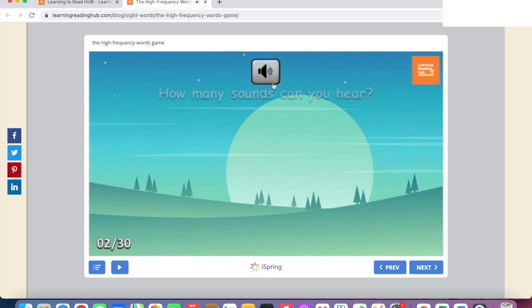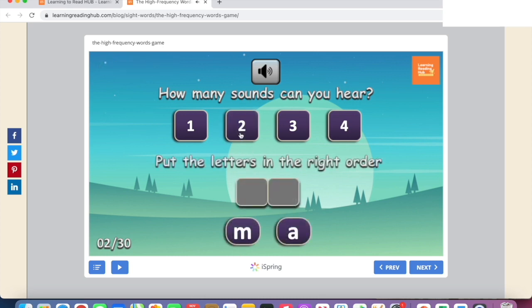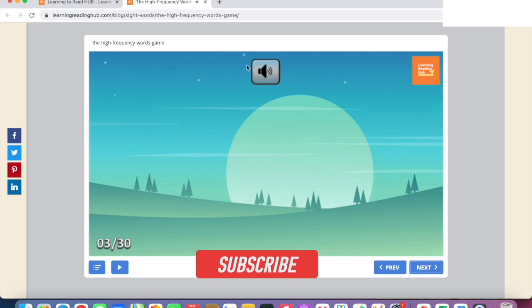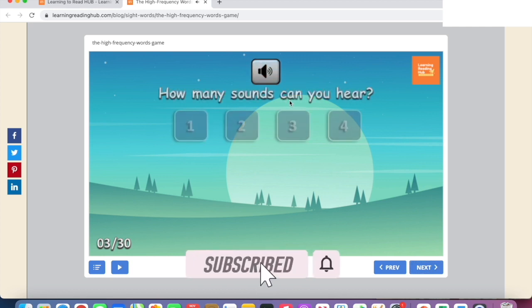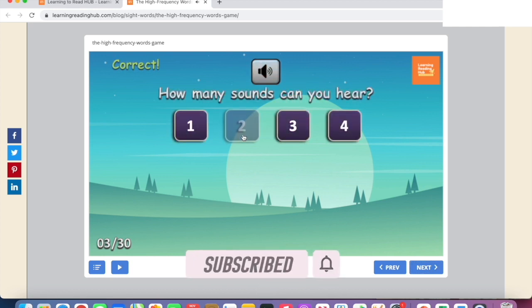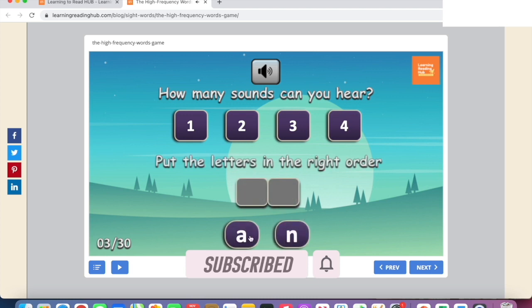How many sounds can you hear? Again, we're asked how many sounds we can hear for this word. In this case, two again. Put the letters in the right order. Two letters appear. And how many sounds can you hear? Again, two. And put the letters in the right order.